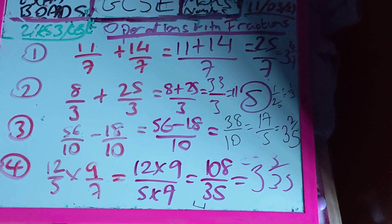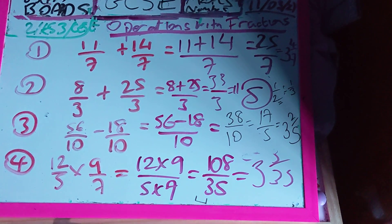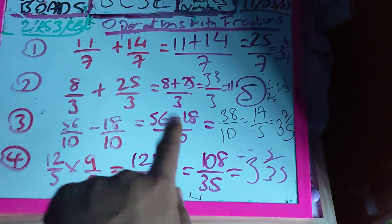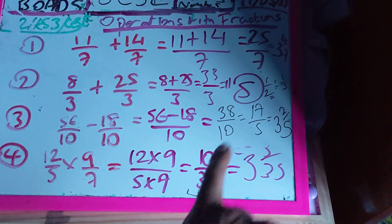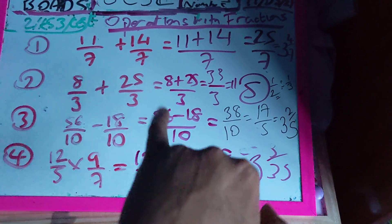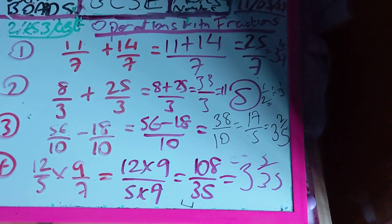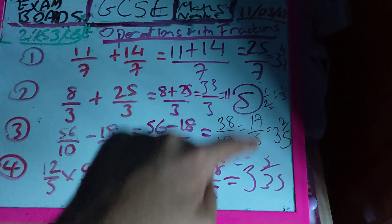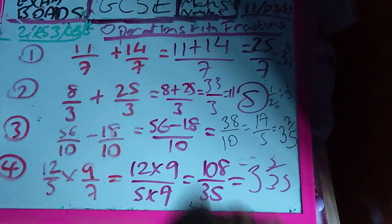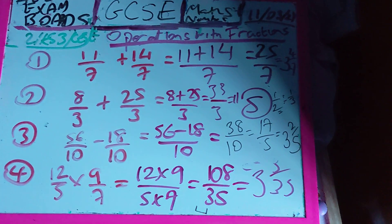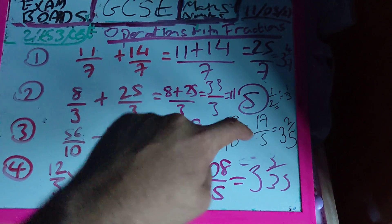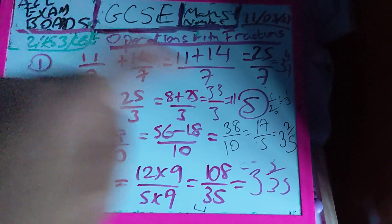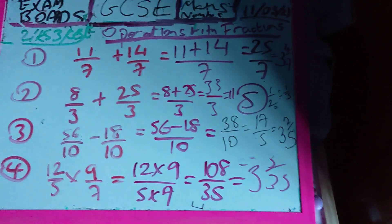Question number 3, 56 out of 10 minus 18 out of 10. Again, same denominator, so I'm going to do 56 minus 18 divided by 10. 38 over 10. 56 minus 18 is 38, which over 10, which simplifies to 19 out of 5, so dividing top and bottom by 2, and then that can be written as a mixed number, so it's going to be 3 and 2 fifths, guys. So I hope that actually made sense, guys.